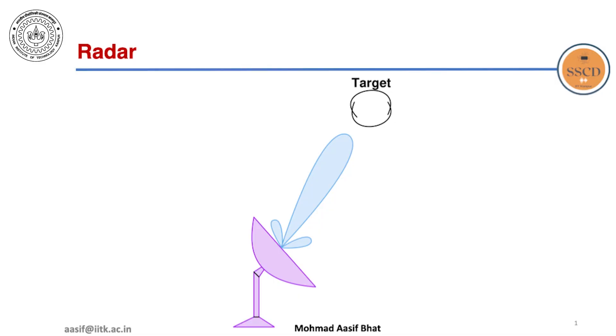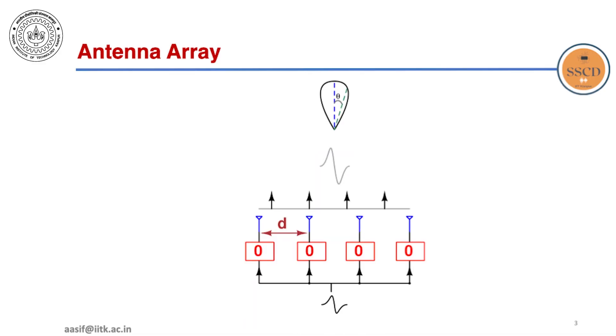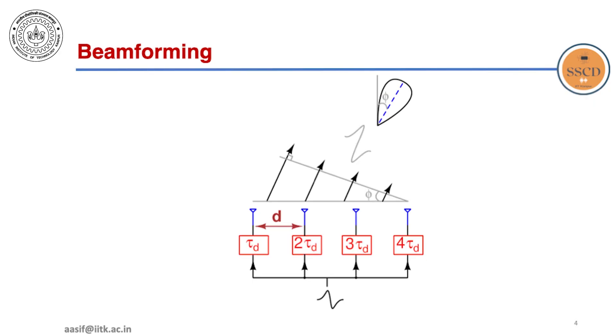Consider the example of a radar which sends a signal to detect a target and scans the space when the target changes its direction. This is achieved by using a phased antenna array system and progressive delay across the array steers the beam in the desired direction.